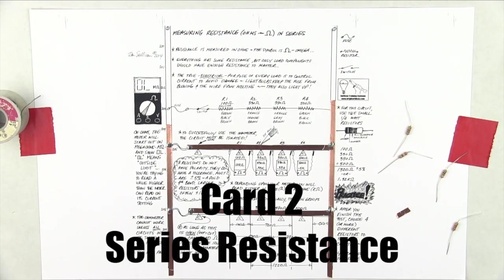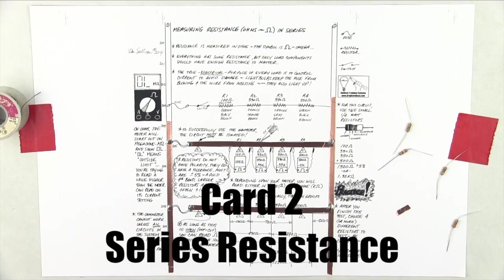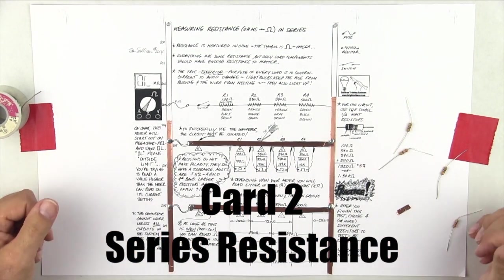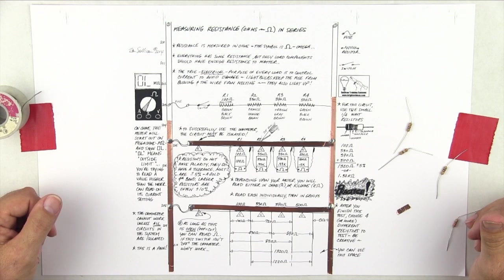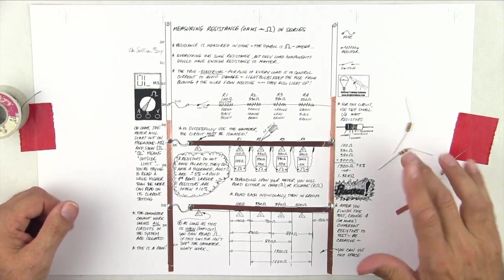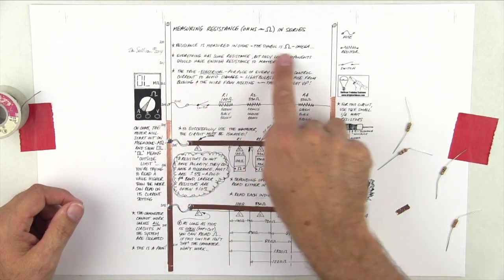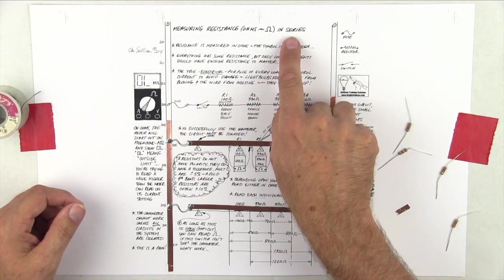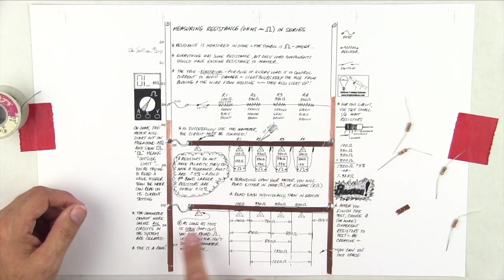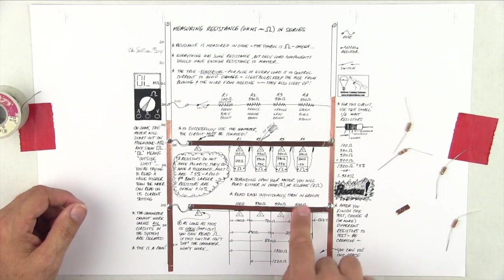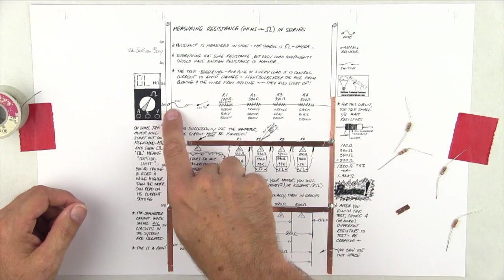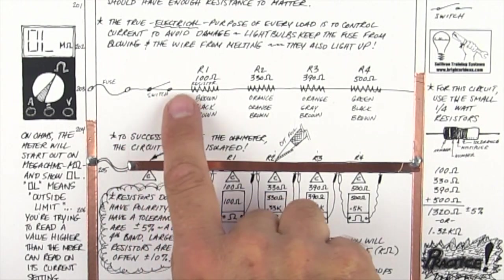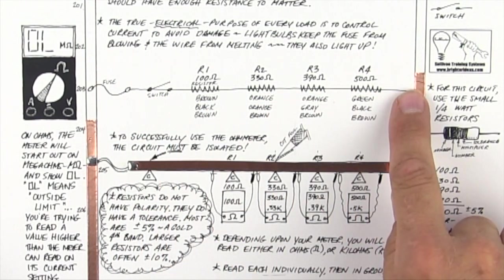Okay, welcome to card number two. I've got the whole card shown here, and I'll zoom in when I'm ready to do the detail. As a start, we're going to be measuring resistance in series. Series means one after the other, and I've covered up the little resistor symbols here. You'll see that there's only one path for current flow, and that's a series circuit.